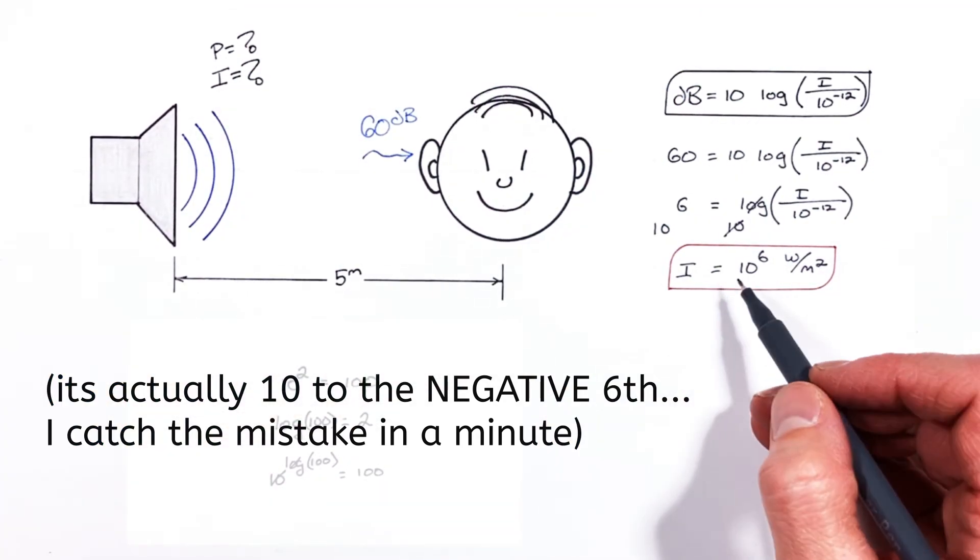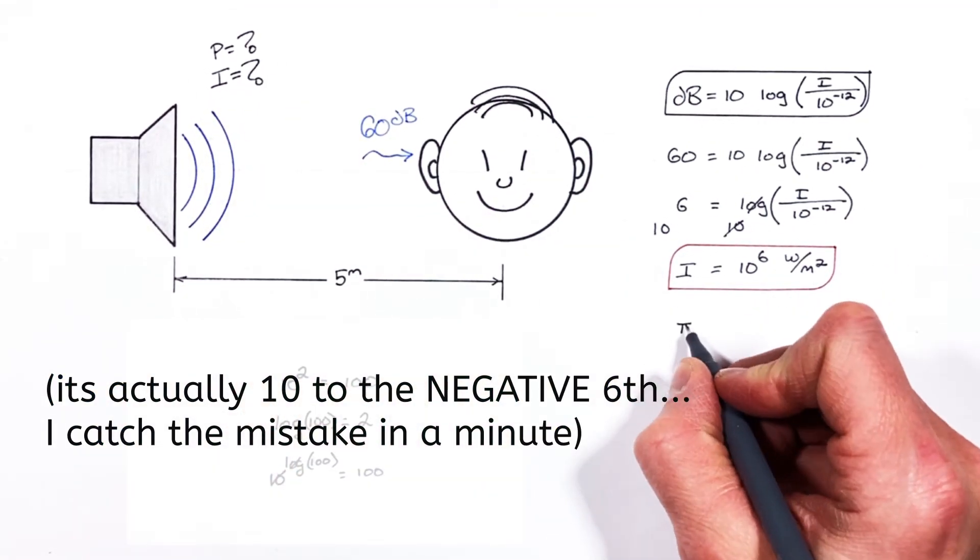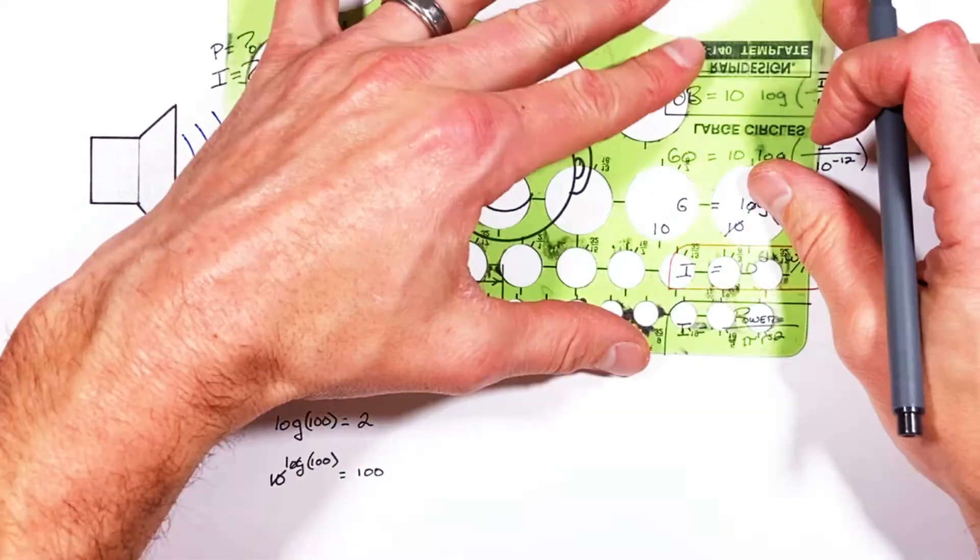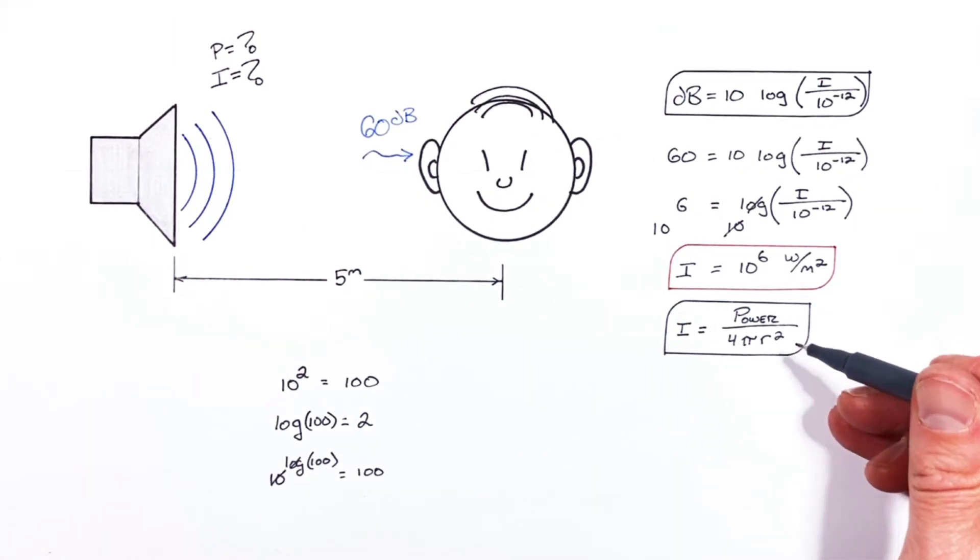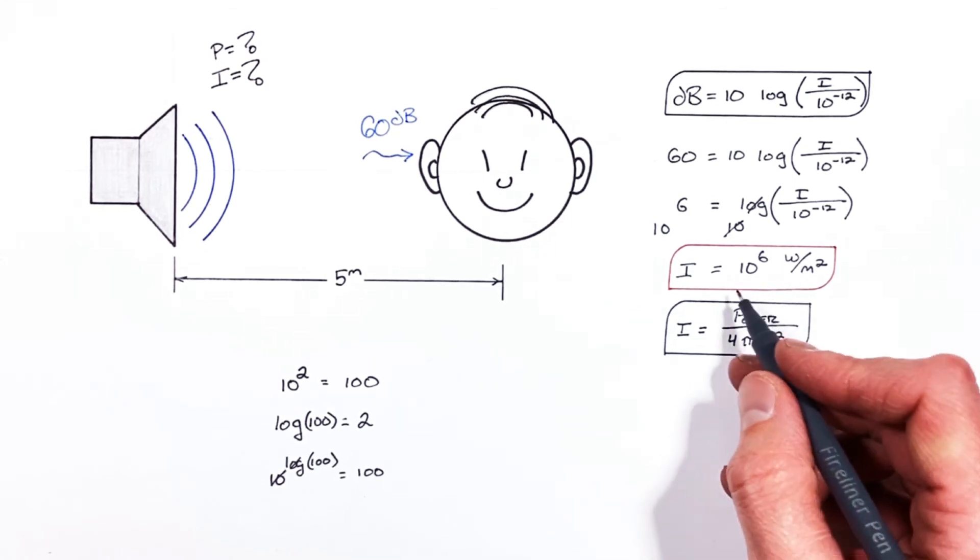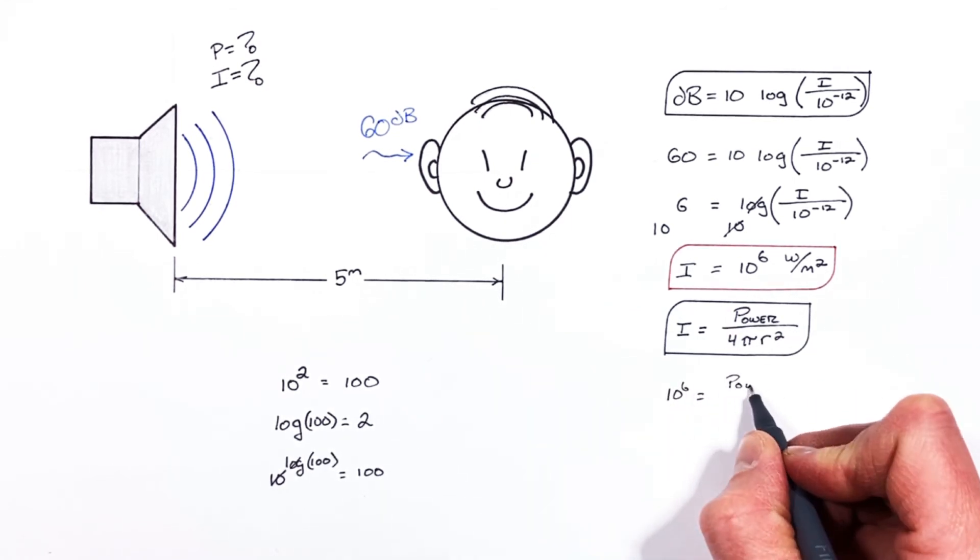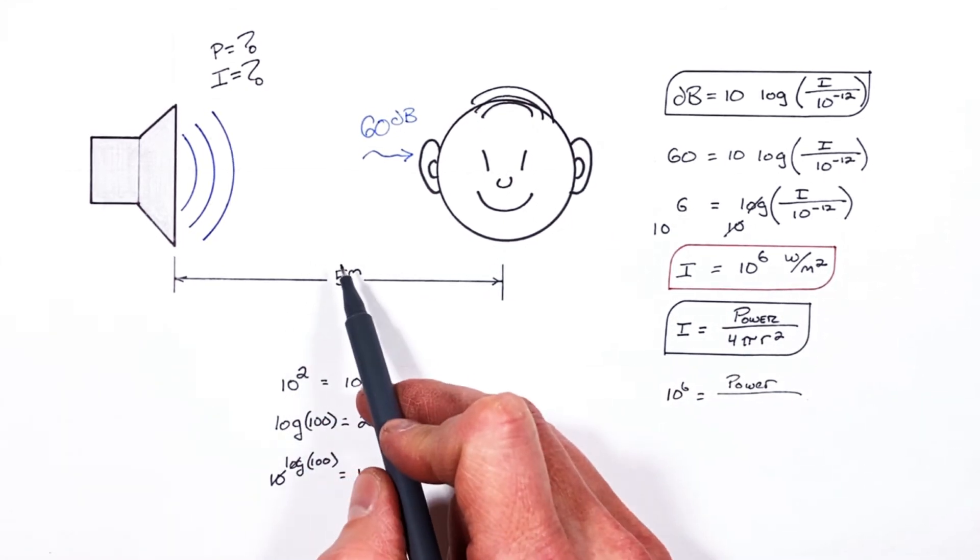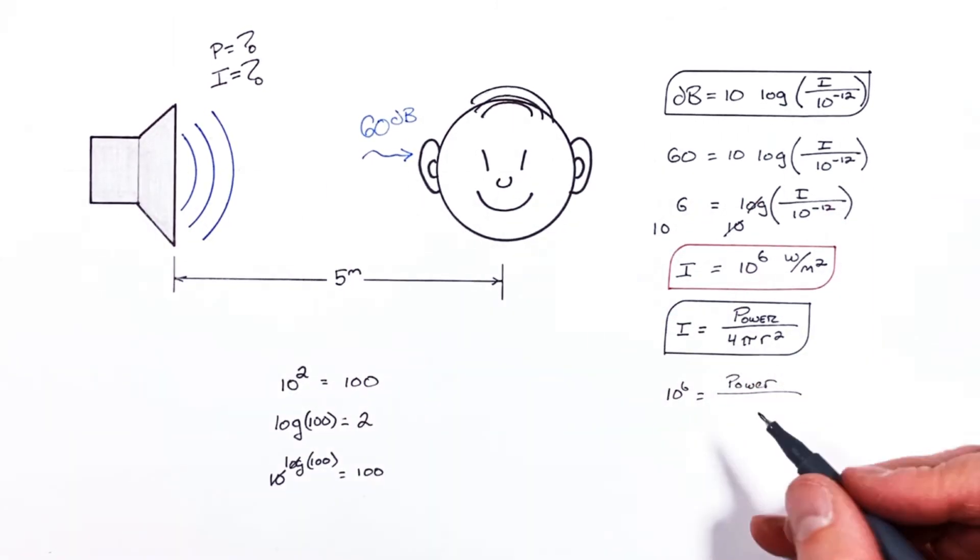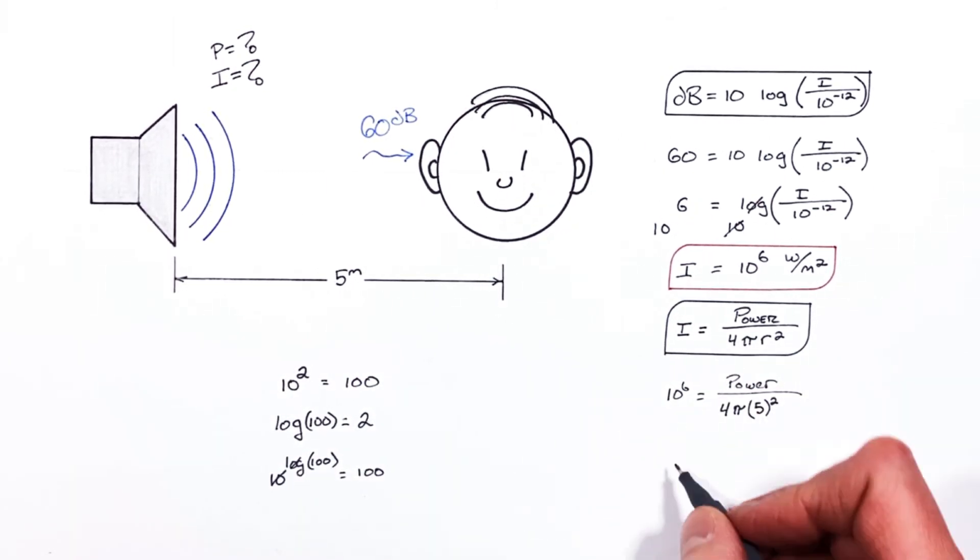Now knowing the intensity we can solve for the power. So intensity is given by power over 4 pi r squared. So knowing the intensity as well as the radius or the distance between the speaker and the listener we can solve for the power.